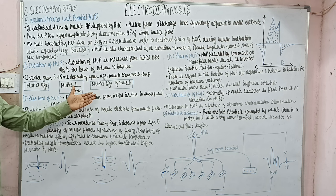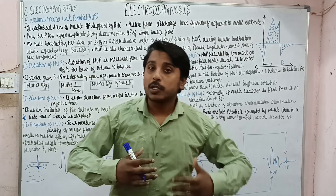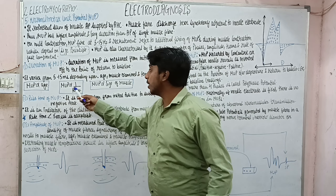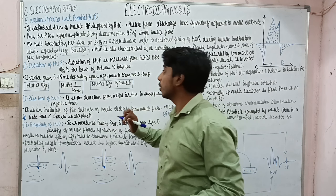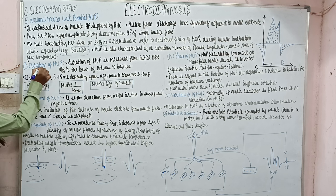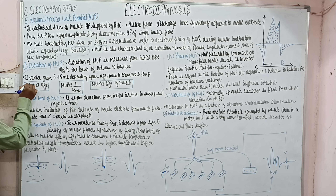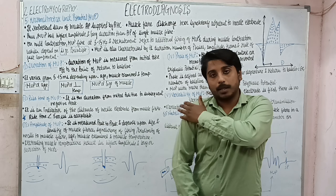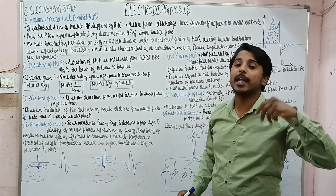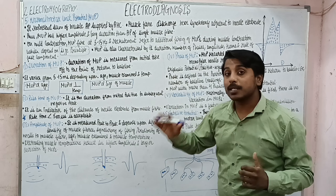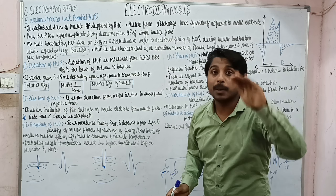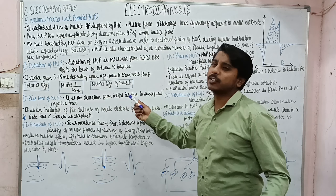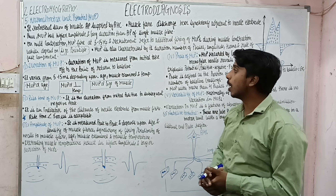Duration of MUP varies and depends upon age, the muscle examined, and temperature. Different muscles will have different values. As age increases, MUP duration increases. For example, in a 5-year-old child, the deltoid muscle duration comes to approximately 9.2 milliseconds, and at 10 years it is 9.6 milliseconds — so duration increases with age.